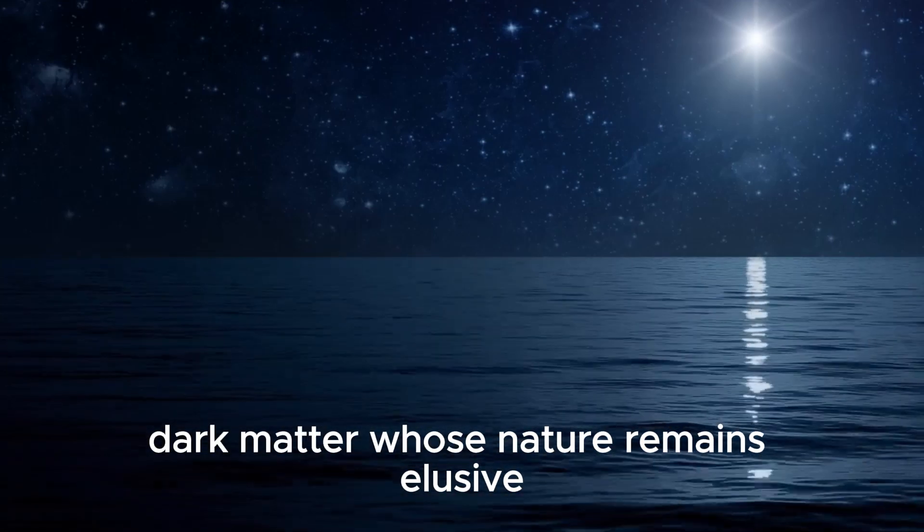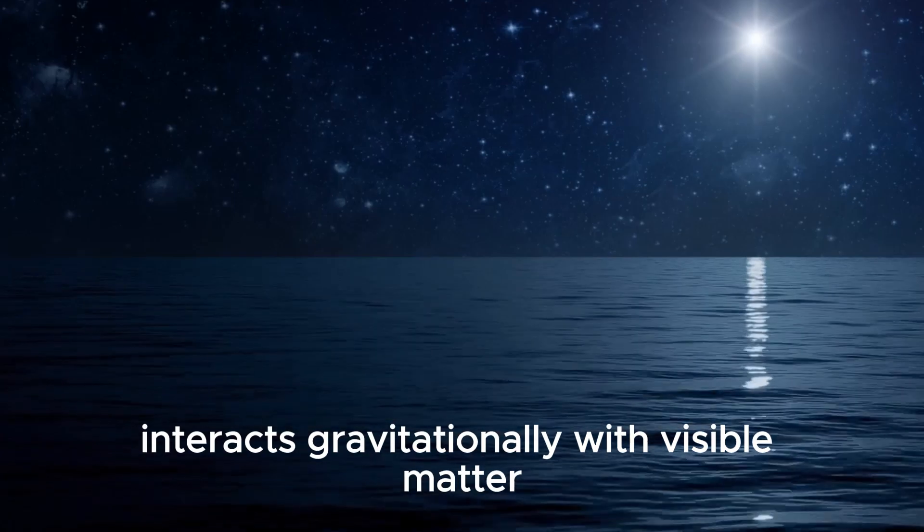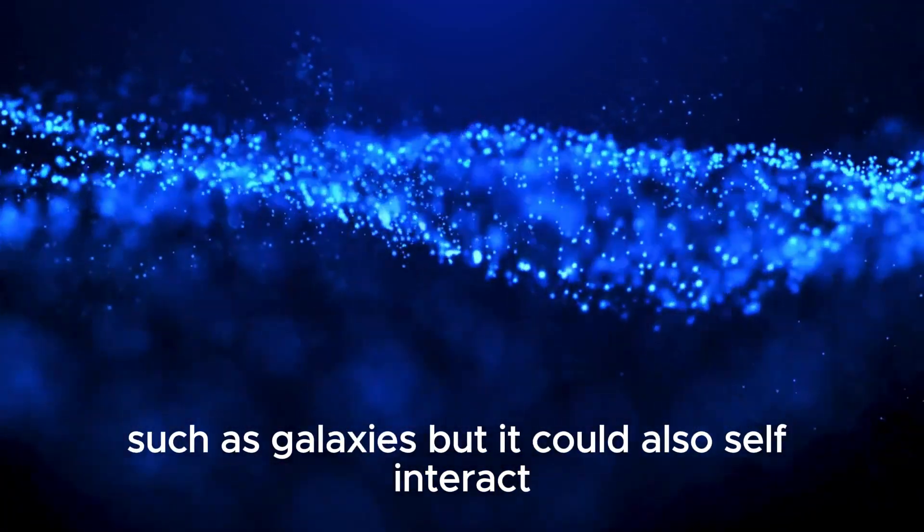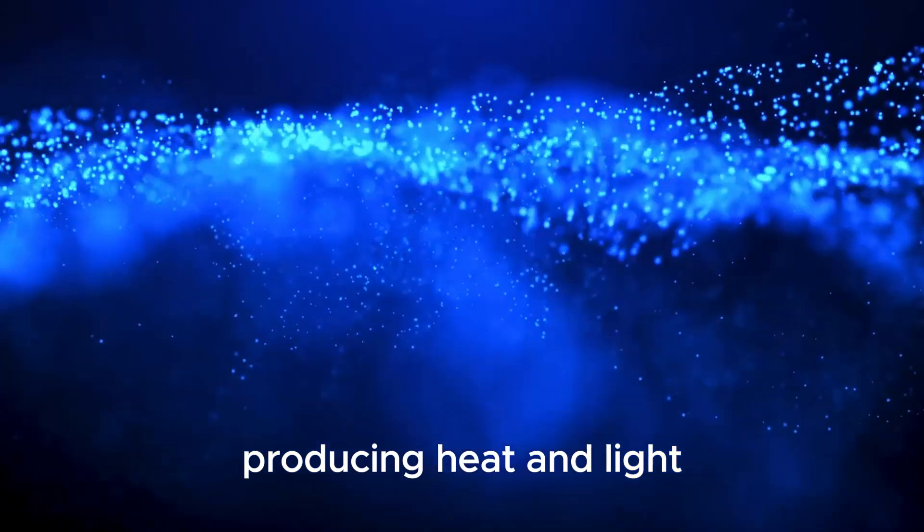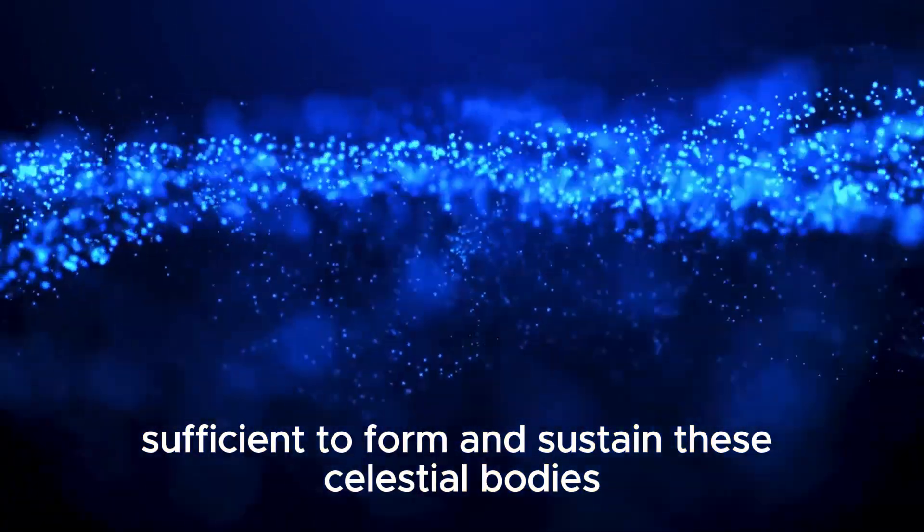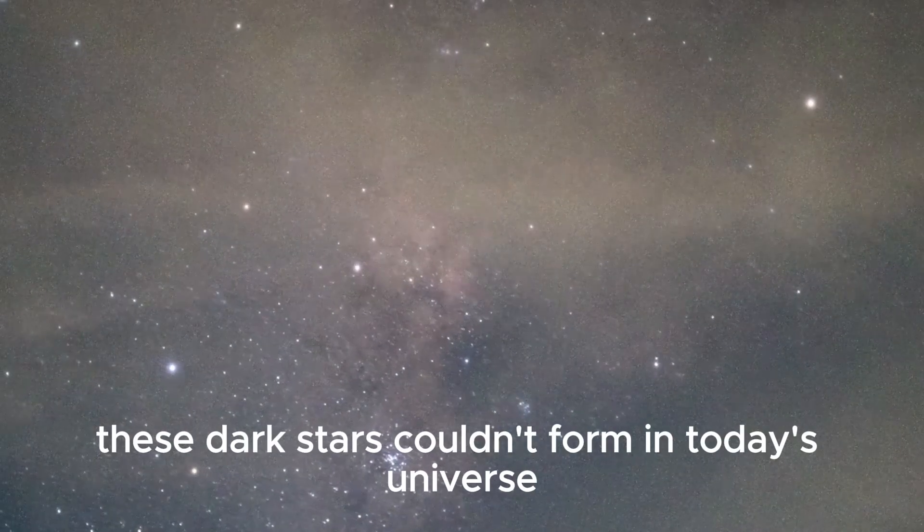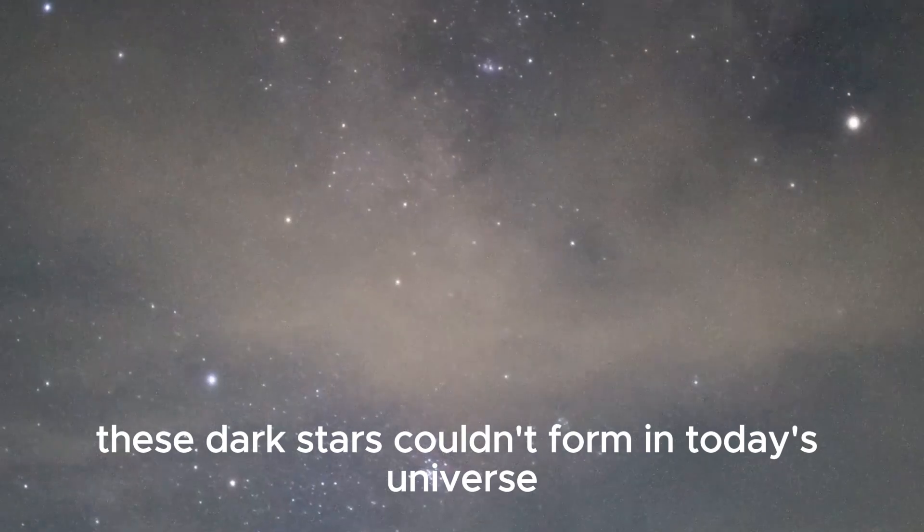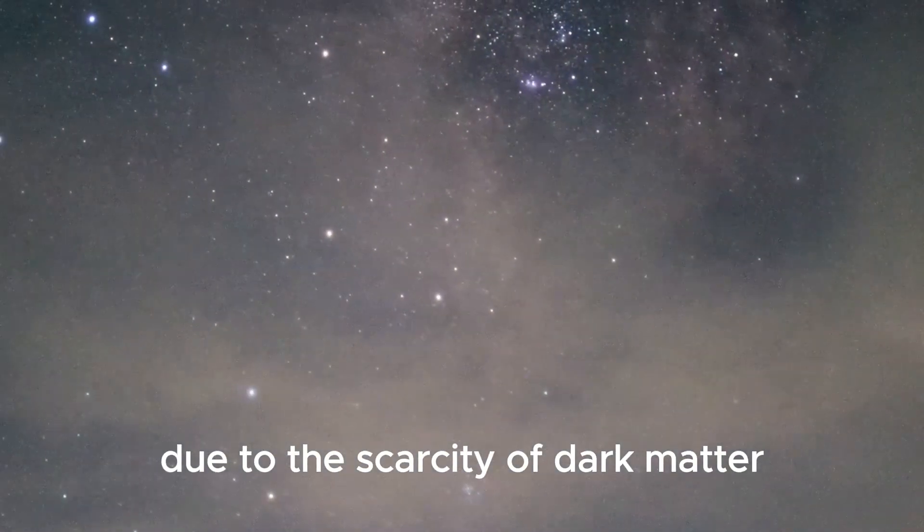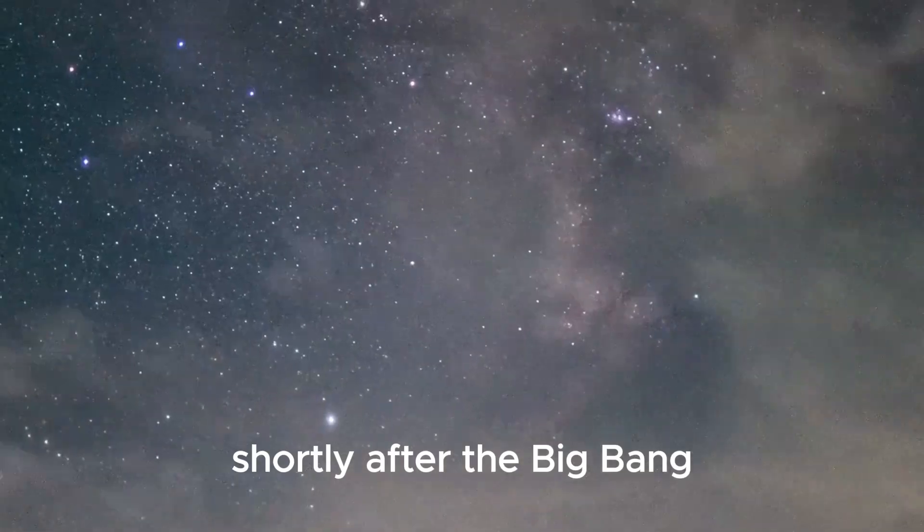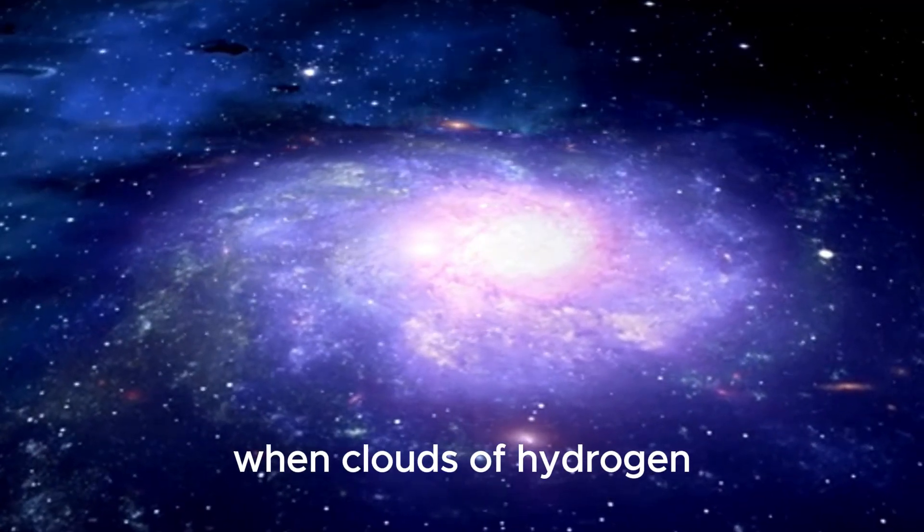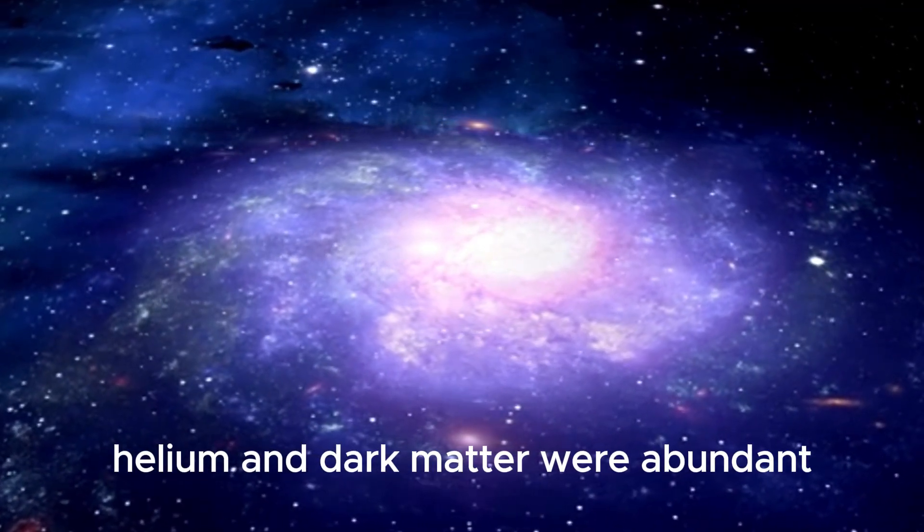Dark matter, whose nature remains elusive, interacts gravitationally with visible matter such as galaxies. But it could also self-interact, producing heat and light sufficient to form and sustain these celestial bodies. These dark stars couldn't form in today's universe due to the scarcity of dark matter. However, they might have emerged in the early universe shortly after the Big Bang, when clouds of hydrogen, helium, and dark matter were abundant.